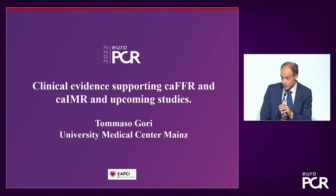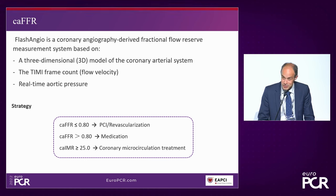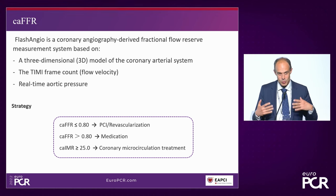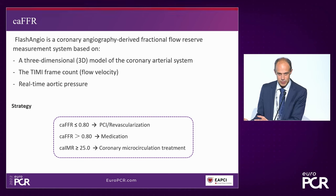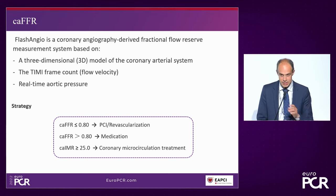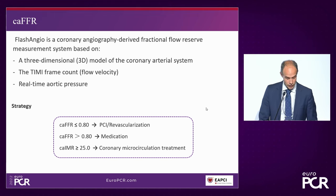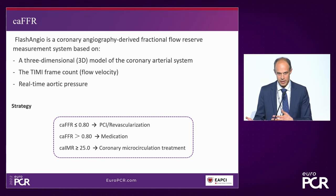Thank you very much to Professor Ji for this update on CAIMR and the ongoing studies. We move on to the last discussion for this session. Tommaso Gori will give us an update on studies based on CAFFR and CAIMR. With no disclosures to report, Tommaso summarizes: CAFFR below 0.80 indicates a lesion that might need revascularization, CAFFR above 0.80 indicates a lesion that should be deferred, and CAIMR above 25 indicates microvascular dysfunction.